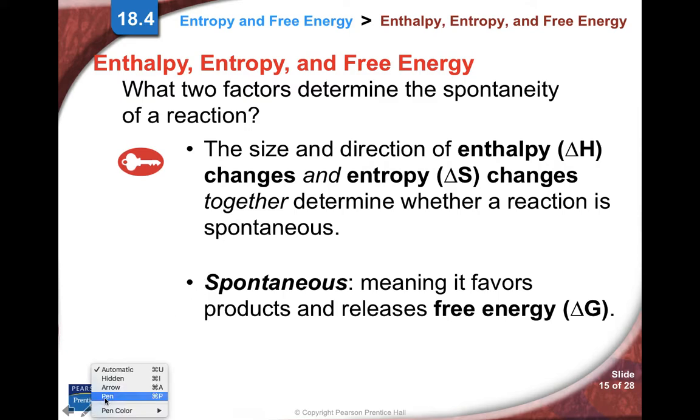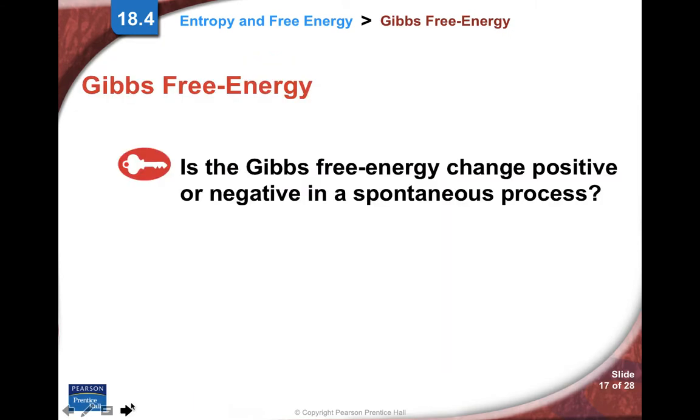Free energy is delta G. Delta G to be spontaneous has to be negative. So the two things we're going to talk about are how delta H and delta S, that's enthalpy and entropy, relate to free energy. We're going to show a mathematical equation that relates all these.